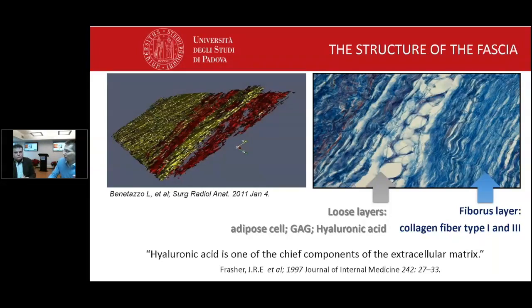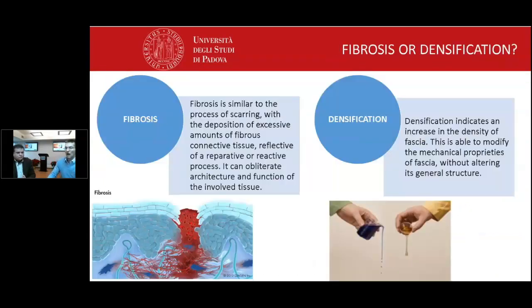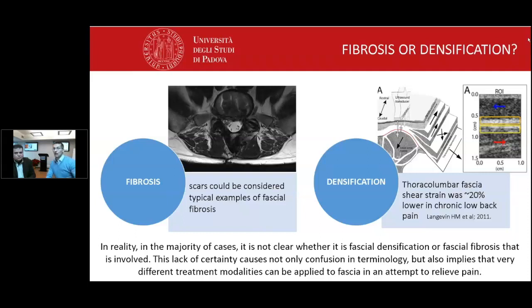Here we have a nice imaging showing a 3D reconstruction of the deep fascia, or thoracolumbar fascia. You can see the three layers it is normally composed of, plus the loose connective tissue in the middle. Fibrosis everybody knows — after an injury you will have fibrosis. Densification is something very particular: it is an increase of the viscosity of the loose connective tissue. On an MRI you can see a scar above the thoracolumbar fascia. Langevin's publication showed that people with chronic low back pain have a decrease in gliding between the different layers of the thoracolumbar fascia.